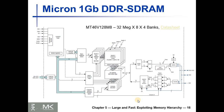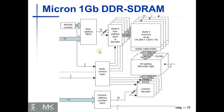I'll zoom in. This slide shows a magnified view of the same chip. Here you have four banks; each bank is 16K by 1K, and each cell is 16 bits.